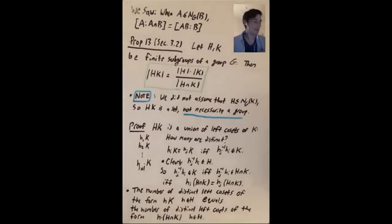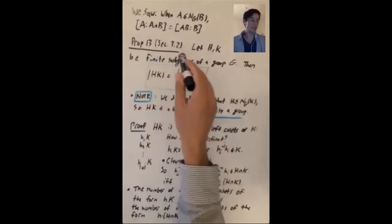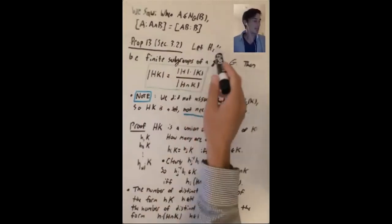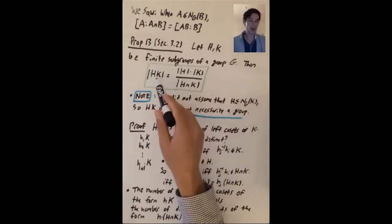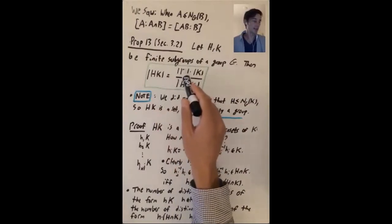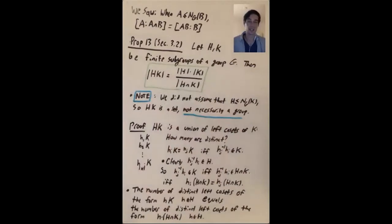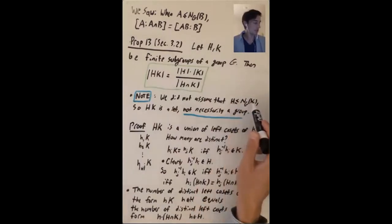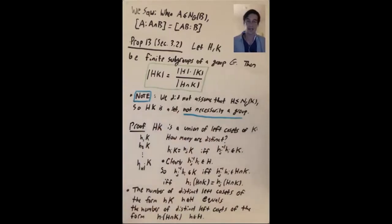Let's go back and look at Proposition 13 in section 3.2. Let H and K be finite subgroups of a group G. Then the size of the product set HK is equal to the size of H times the size of K divided by the size of the intersection. Because we did not assume H is in the normalizer of K, this product set HK is just a set — it's not necessarily a group.